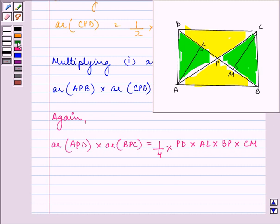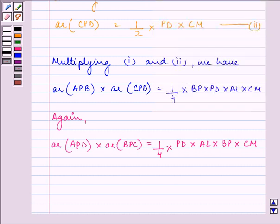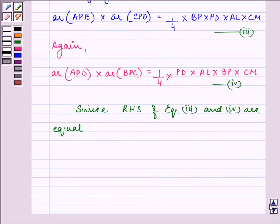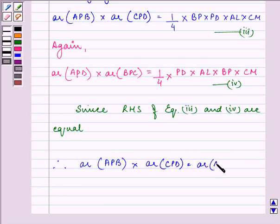Further, if you notice, the left-hand side are the product of the areas and the right-hand side are equal to each other. Since RHS of equation 3 and 4 are equal, therefore we can see that LHS are also equal. That is, area of APB into area of CPD is equal to area of APD into area of BPC.